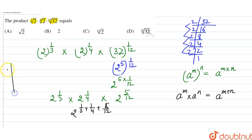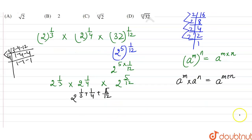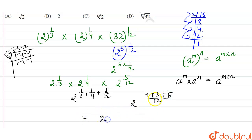Now we need the LCM of 3, 4, and 12. The LCM of 3, 4, and 12 is equal to 12. Taking LCM 12: 3 goes into 12 four times giving 4, 4 goes into 12 three times giving 3, and 12 stays as 5. So the exponent becomes 4 plus 3 plus 5 all over 12, which equals 12 over 12.